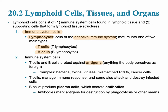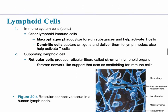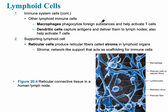Antigens are usually large molecules, but really anything that can irritate the immune system qualifies. The T cells and the B cells are included. The B cells produce plasma cells, which secrete antibodies — we'll talk more about that later. Other lymphoid cells include macrophages, which develop from monocytes. Macrophages phagocytize foreign substances and also help to activate T cells.